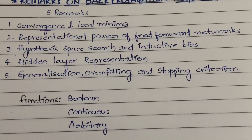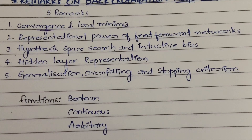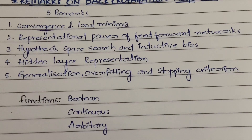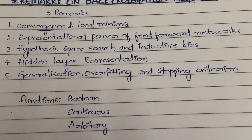The fifth remark is generalization, overfitting, and stopping criteria. This concerns when you should stop your backpropagation algorithm — how to generalize it, since each time you need to calculate the forward error, modify the weights, and repeat. The stopping criteria is straightforward: you stop the algorithm when the error is almost close to zero or when the error falls below the threshold value you have set.